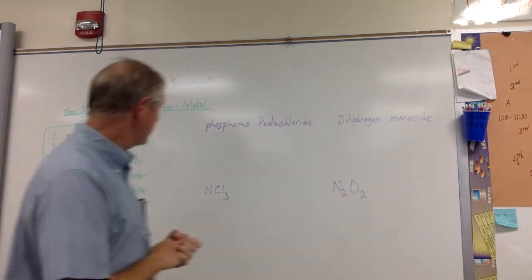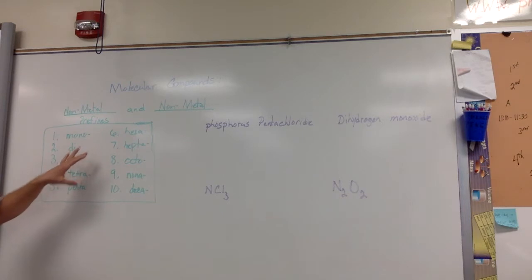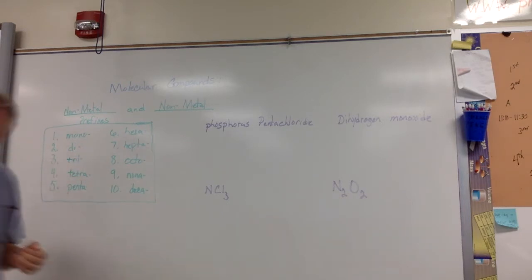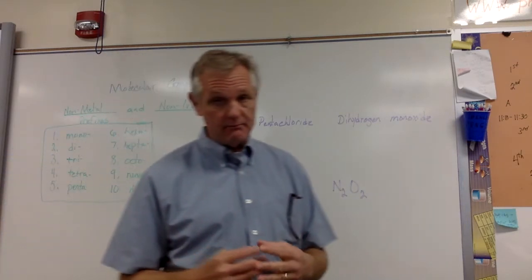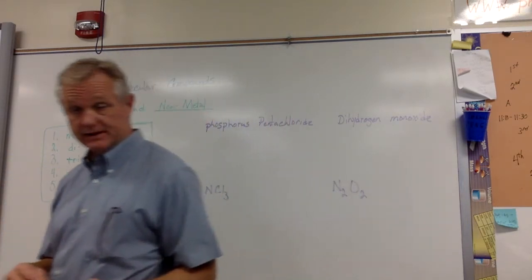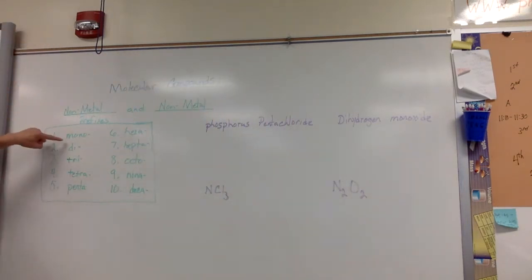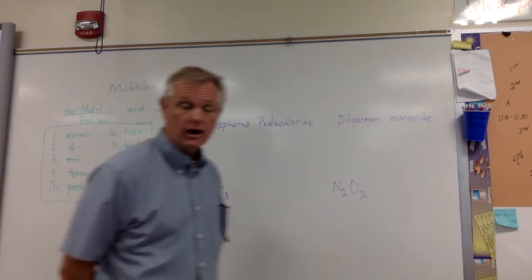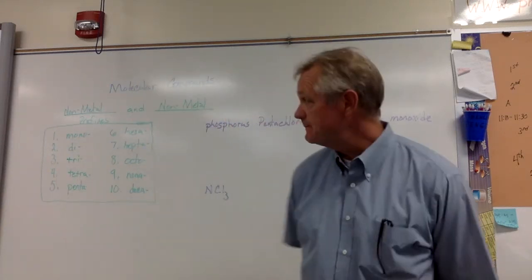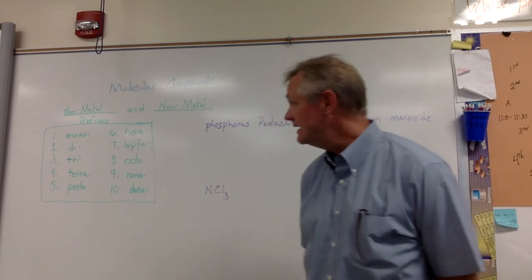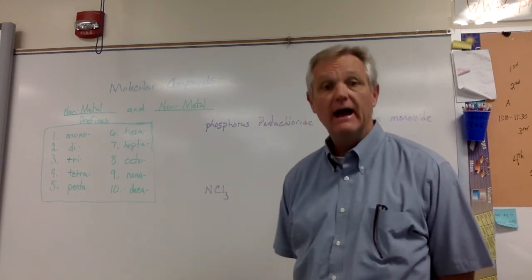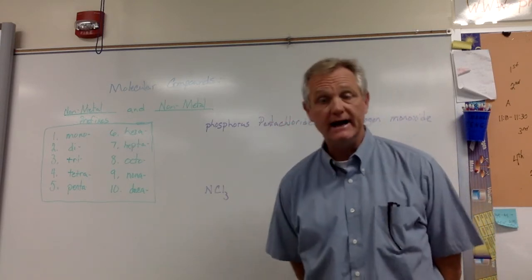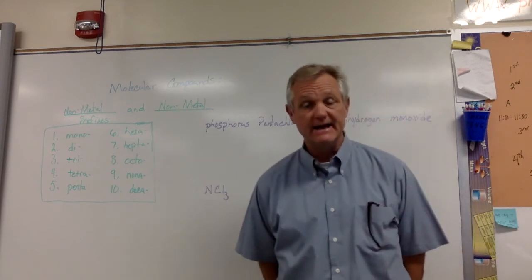In order to do this, we have to know a couple of basic prefixes because we use prefixes to tell us the numbers of the different elements. For one: mono, two: di, three: tri, four: tetra, five: penta, six: hexa, seven: hepta, eight: octo, nine: nona, and ten: deca.